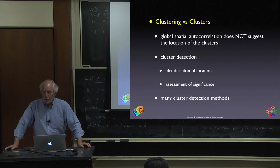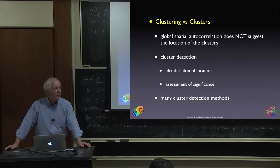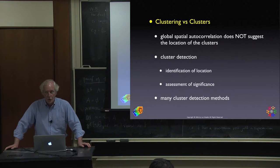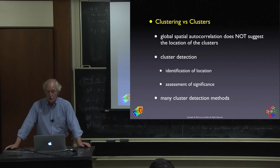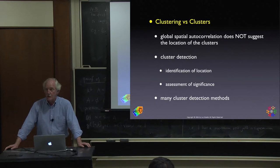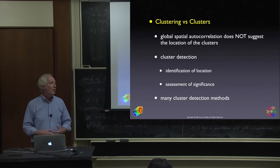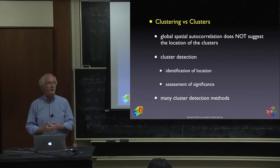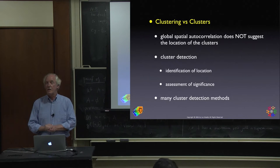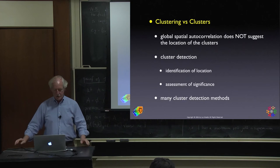Here, we actually want to know where the clusters are — not just that the data is not spatially random, but where is this structure. This is very practical: if you're going to intervene in public health situations, you want to know where the clusters of a particular disease are. Just knowing they're correlated isn't enough — you want specific locations.